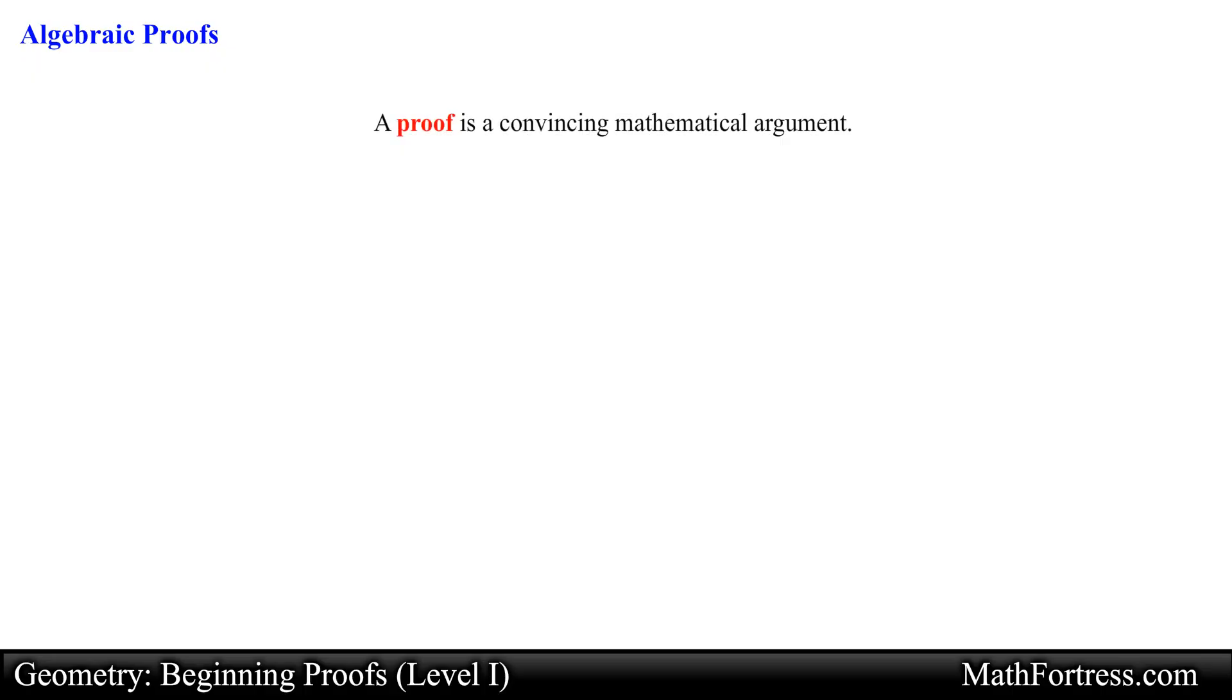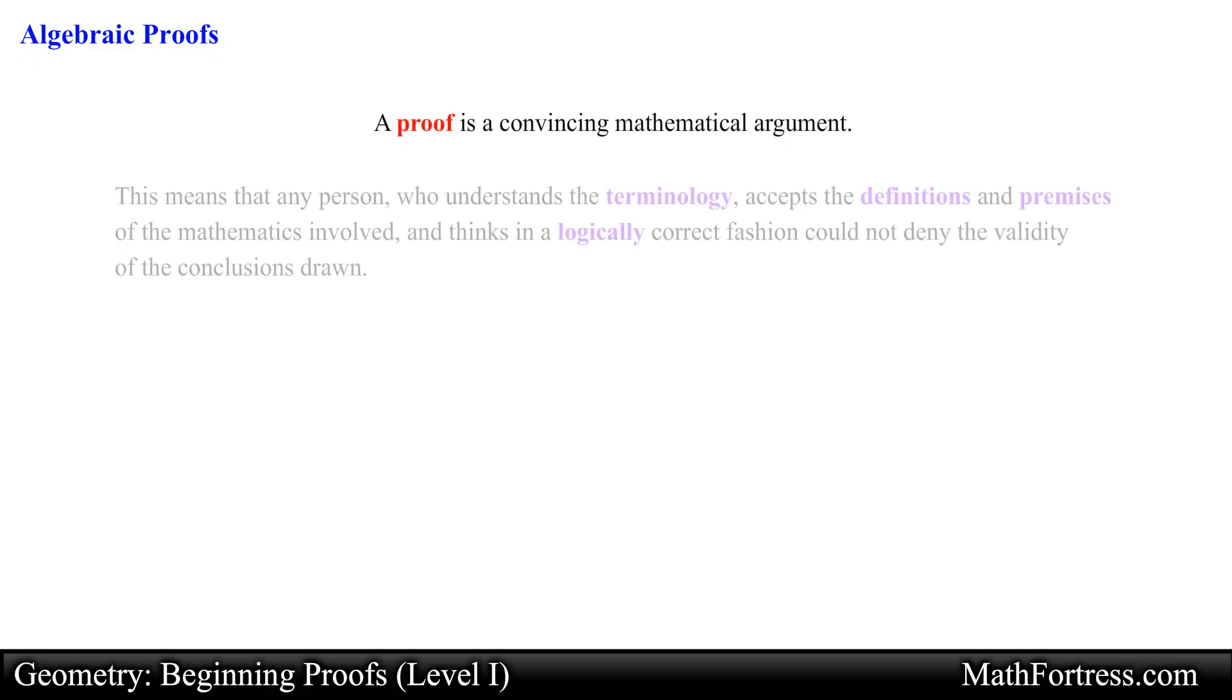A proof is a convincing mathematical argument. This means that any person who understands the terminology, accepts the definitions and premises of the mathematics involved, and thinks in a logically correct fashion could not deny the validity of the conclusions drawn.